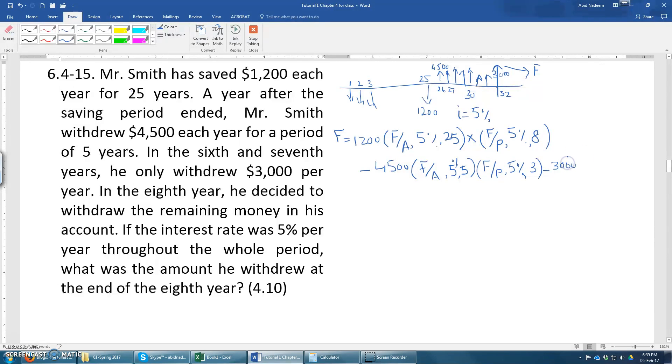And then for the next two years, $3,000 have been withdrawn, 5%, and then for two years. And then it will be again compounded for one more year.